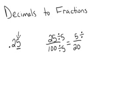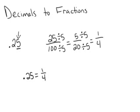And it looks like I can do that again. 5 divided by 5 is 1, and 20 divided by 5 is 4. So that means that .25 equals 1 fourth.